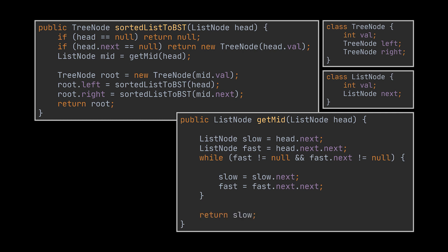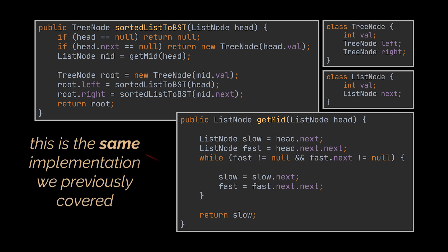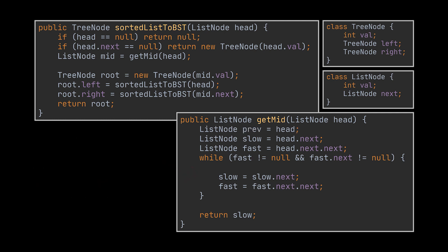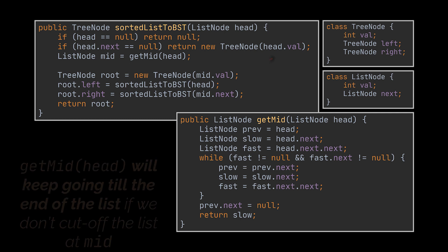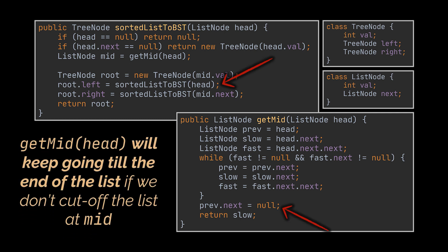The implementation of this getMidHelper method will differ a bit from what we previously saw. The slow and fast pointers remain the same, and the basic building blocks of the previous implementation are all still there. However, we also need to keep track of the parent — the element preceding the middle element. Because if we directly return the middle element without cutting off the list right before it, the left sublist represented by the head node will still be taking into consideration the whole list.